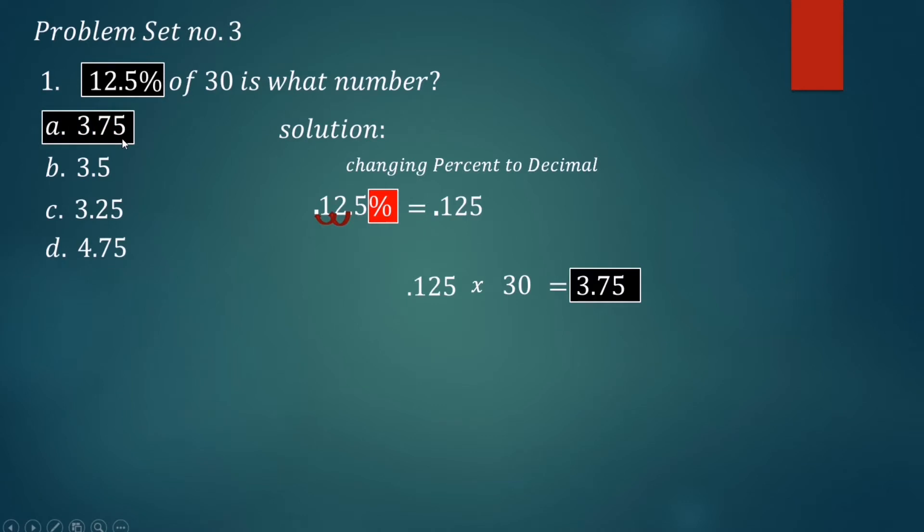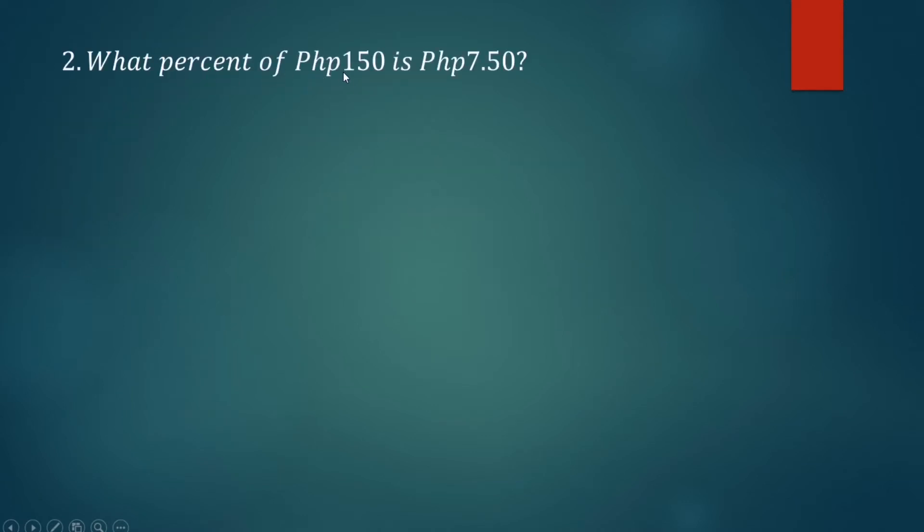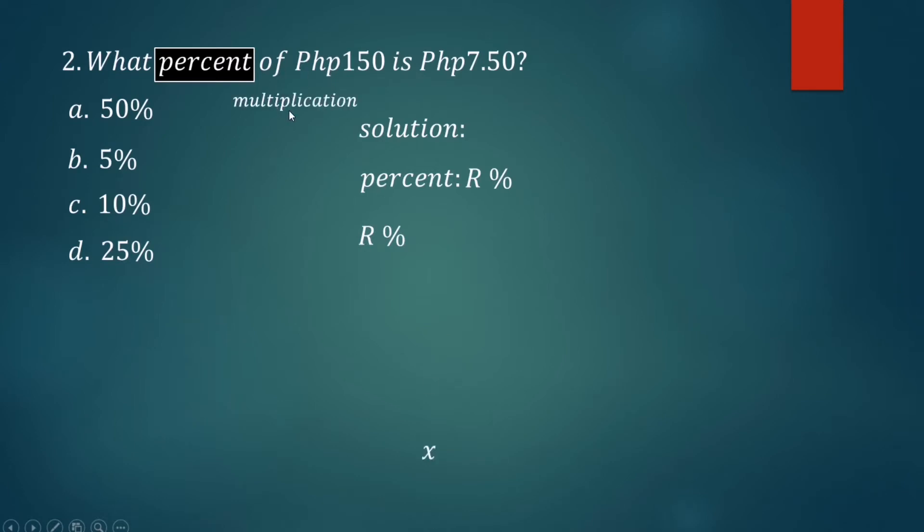Number two: What percent of 150 pesos is 7 pesos and 50 cents? A) 50%, B) 5%, C) 10%, D) 25%. We are asking here what percent of 150 pesos gives 7 pesos and 50 cents. We let the variable R be the percent, and the operation to be used is multiplication, so R multiplied by 150 pesos equals 7 pesos and 50 cents.